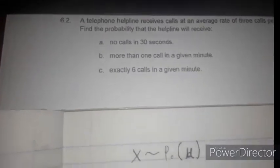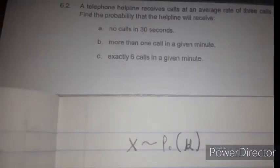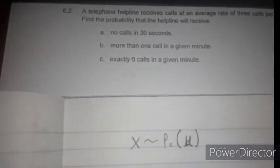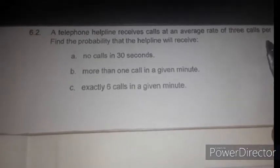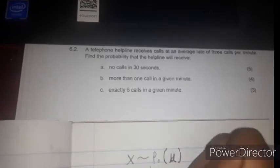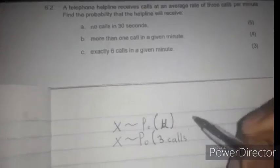This is a Poisson distribution. This is the notation for the Poisson distribution — we note it by the mean, which is the population mean. The average is three calls per minute, so the mean is three calls per minute.